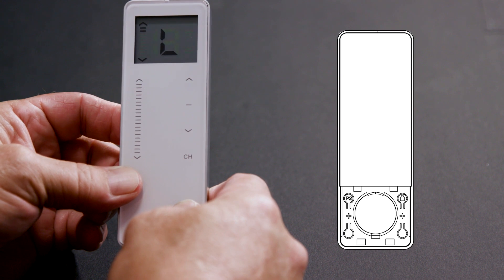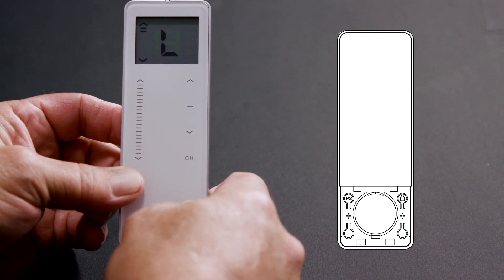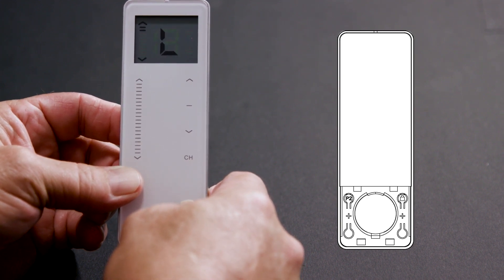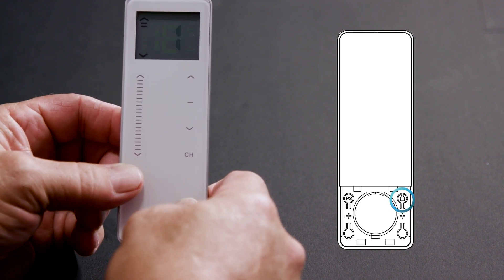To unlock the remote, press and hold the lock button until the display changes back to U. The remote is now unlocked.